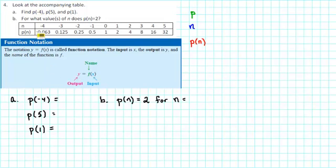Now in this particular problem, we don't have y, f, and x, we have n and p(n). So what we need to understand is what is the input, what is the output, and what is the name? Well, p is the name of the function, n is the input, and p(n) is the output.